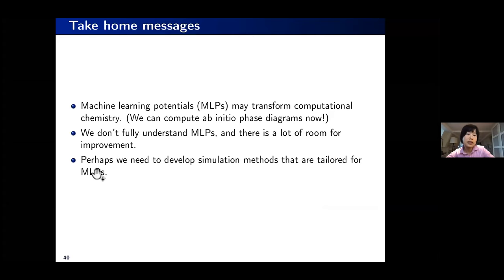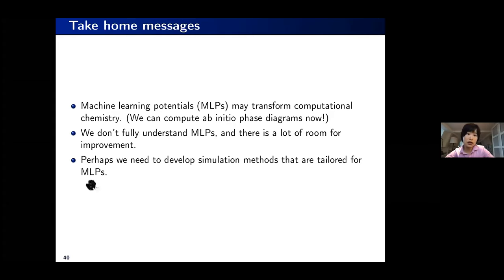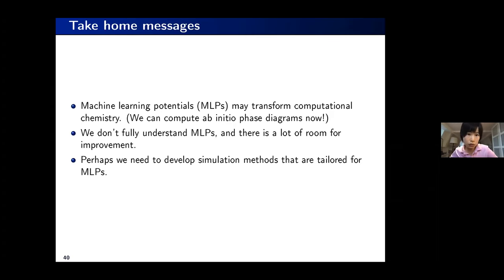That's basically it. The take-home message is that machine learning potentials are a very powerful tool — now we can compute ab initio phase diagrams. There are still many things we do not fully understand about machine learning potentials, and there will be a lot going on in that direction, particularly for long-range interactions. There's also probably a good time to revise the typical simulation tools to better utilize state-of-the-art machine learning potentials. That's the end of my talk, and I'd like to answer more questions.